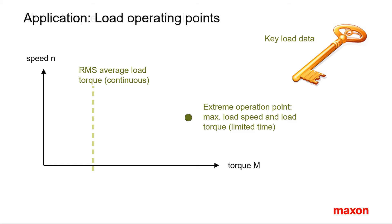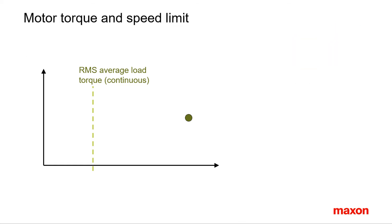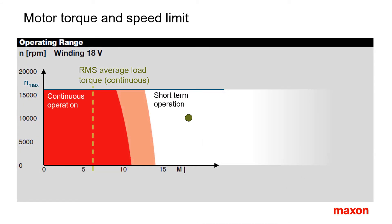Let's first look at speed. We need a motor with a speed limit that is high enough to cover all operating points. The speed limit of Maxon motors corresponds to the upper limit of the operating range diagram. However, it is essentially the required torque that defines the motor size. We have to select a motor that, on average, can produce the necessary torque. Hence, we need a motor with the nominal torque larger than the RMS average load torque. Short load peaks, as during acceleration, may be located in the short-term operating range.